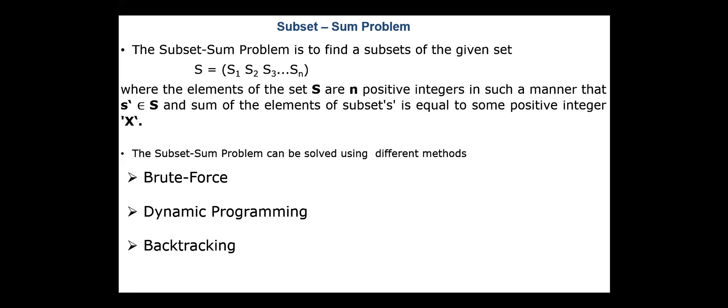The general statement of the subset sum problem is simple. Given a set of positive integer numbers, we have to find if there is a subset whose elements sum to a certain value x. In the second variation of the problem, we have to find all the subsets whose sum equals the integer value x. The subset sum problem can be solved using different methods: brute force, dynamic programming, and backtracking.